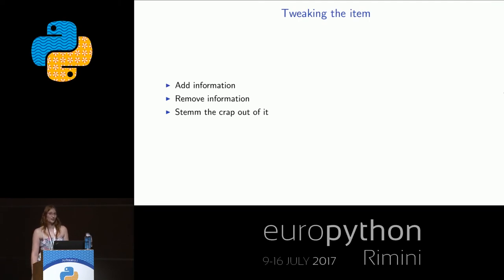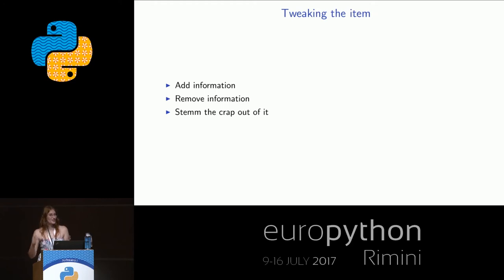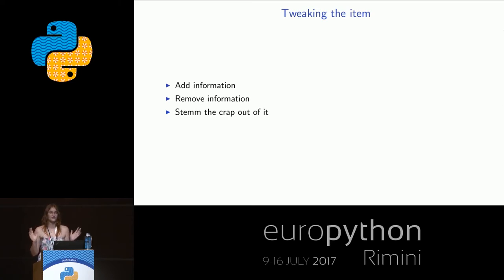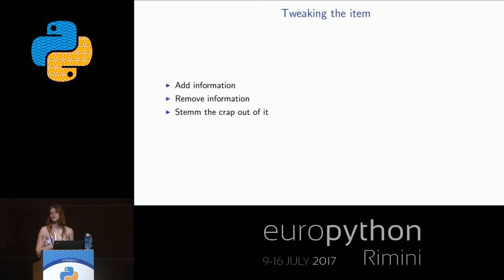So I went to the second option: tweak each item in the dataset separately. Since it's short text, there are not too many things you can do. You can add information — in my case, not all descriptions had the title inside, and sometimes it was crucial. For instance, the title might say 'no education required for this job' with no other sign in the text. You can also remove information. These texts have many different topics inside — contact information, start date, salary — so I would remove numbers, dates, and emails.